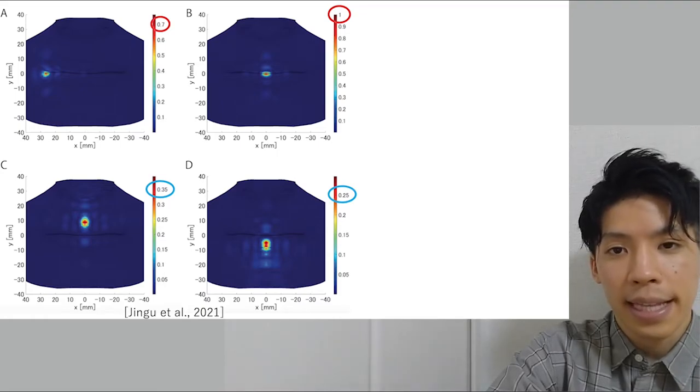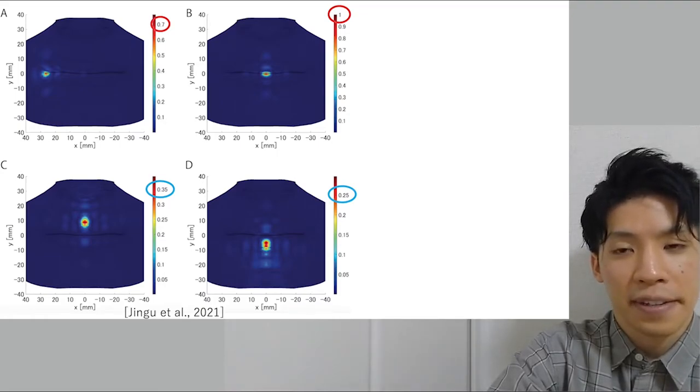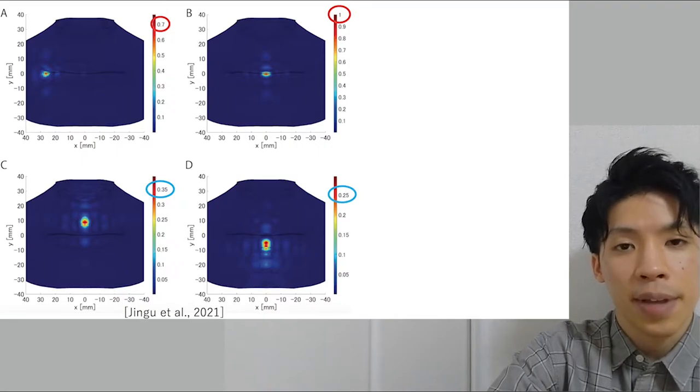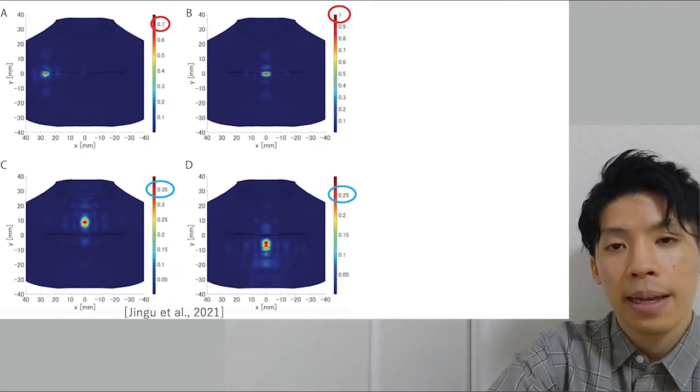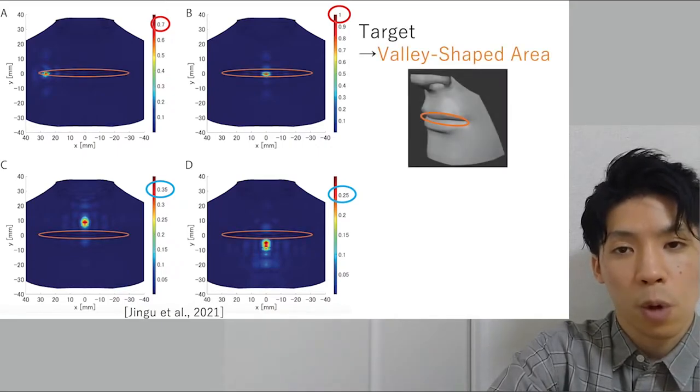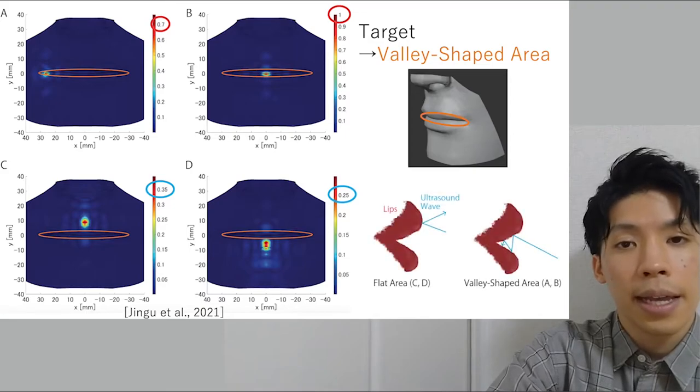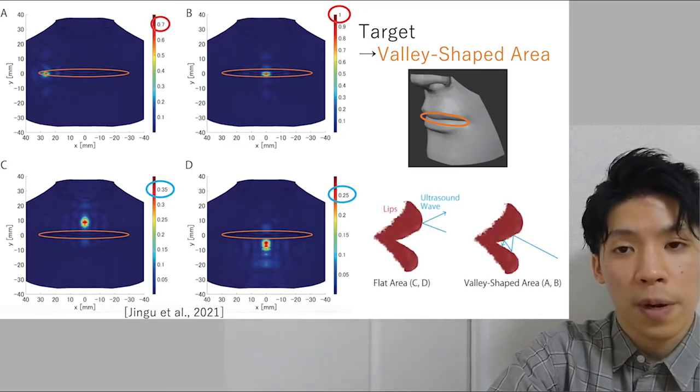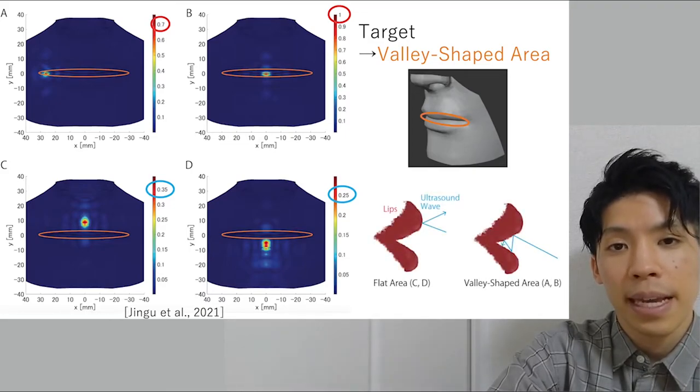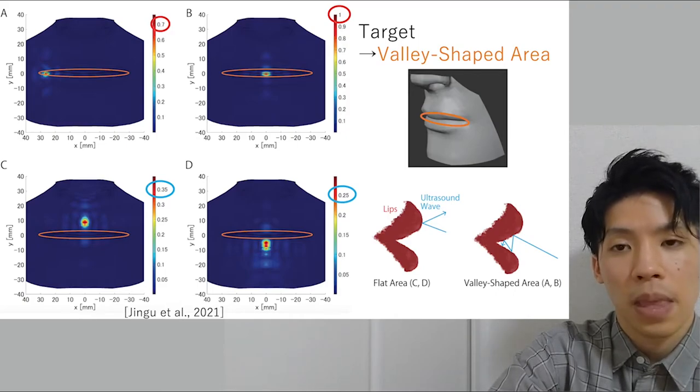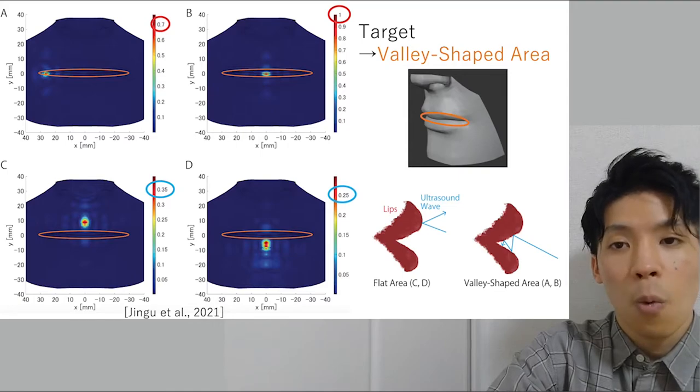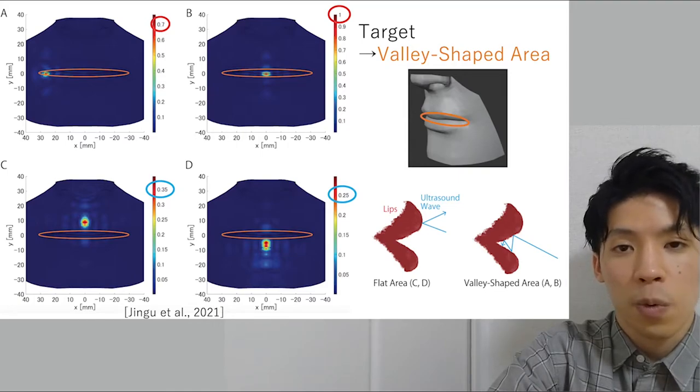Our previous work investigated basic tactile perception characteristics of lips in mid-air ultrasonic haptics. The lowest tactile thresholds were achieved at the belly-shaped area of the lips in terms of location. It would be due to the multiple reflection of ultrasonic waves in the belly-shaped structure between the upper and lower lip. So, in this study, we formed an ultrasonic focal point at the belly-shaped area.